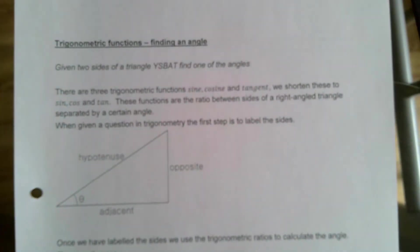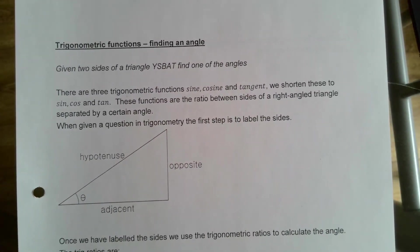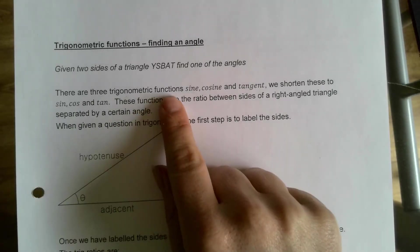We're going to start doing trigonometry today. These trigonometry rules only work with right angle triangles - just like with Pythagoras, where a² + b² = c², that only works with right angle triangles. Same for the stuff we're working with here. There are three different functions: sine, cosine, and tangent.